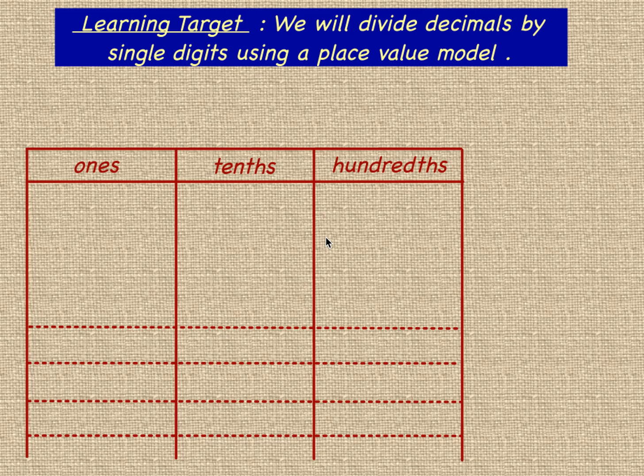Our learning target for this segment is to divide decimals by single digits, and we're going to use a place value model, but also show how that relates to the standard algorithm. An algorithm is that process or set of rules that we follow when we're doing calculations. It's the traditional method of setting up a division problem. We're going to start with looking at the problem 6.72 divided by 3. We have it written horizontally here, but also showing the standard algorithm.